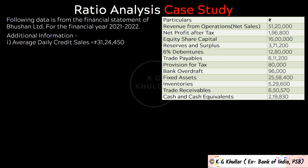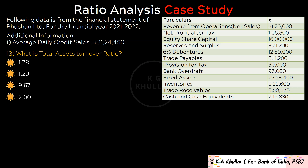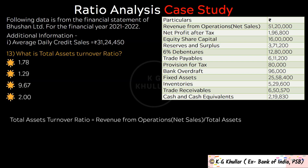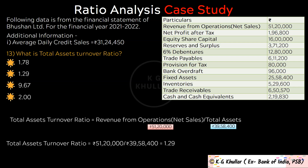The next question is: What is total assets turnover ratio? Total assets turnover ratio is calculated as Revenue from Operations divided by Total Assets, which is Rs. 51,20,000 divided by Rs. 39,58,400, equals 1.29. Revenue from operations is given in the data and total assets were found in a previous part. The correct option is option B.